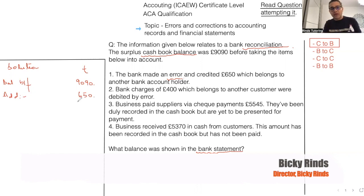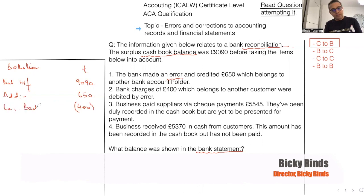Eventually they are going to correct it, but right now we are only concentrating on reconciliation, nothing else. For the second item — bank charges of 400. They took away 400, so you also take away 400. Bank charges — 400.